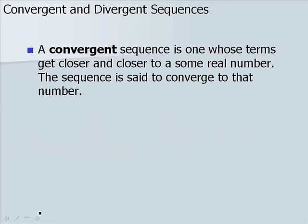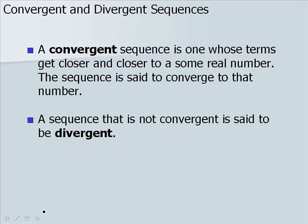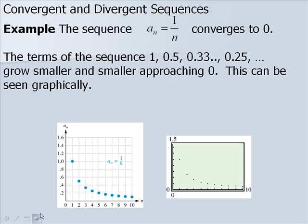A convergent sequence is one whose terms get closer and closer to some real number; the sequence is said to converge to that number. For example, the sequence a sub n equals 1 over n converges to 0. The terms grow smaller and smaller approaching 0, as seen graphically and on the calculator, where values gradually get closer and closer to 0.